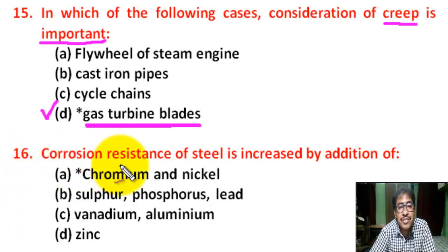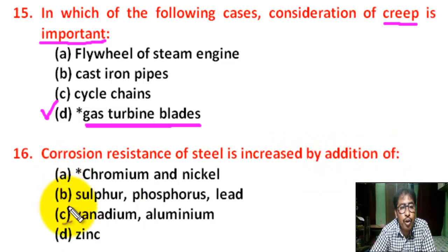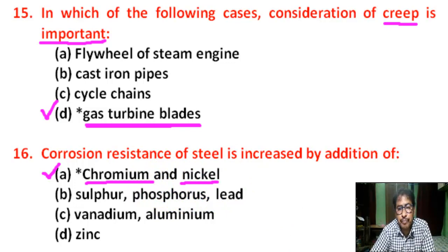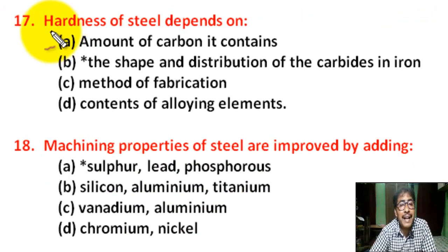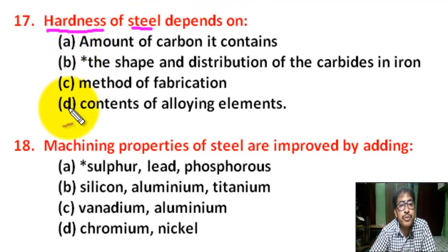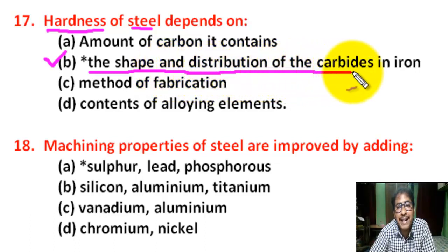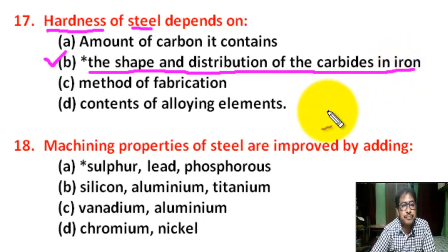Question number sixteen: corrosion resistance of steel is increased by addition of — correct answer is A — corrosion resistance of steel is increased by addition of chromium and nickel. Question number seventeen: hardness of steel depends on — correct answer is B — hardness of steel depends on the shape and distribution of the carbides in iron.